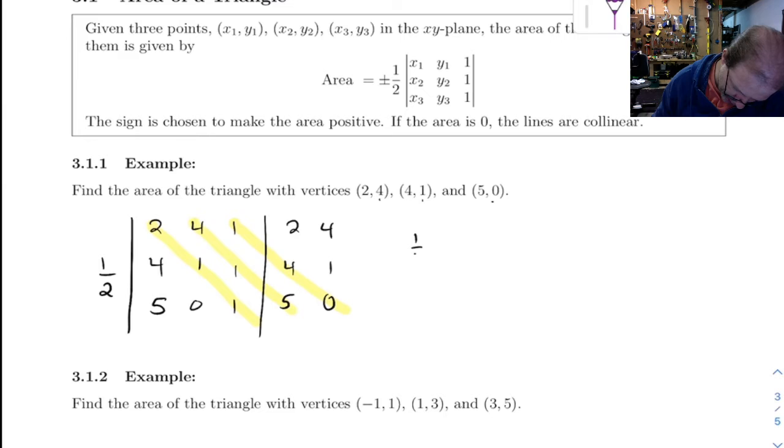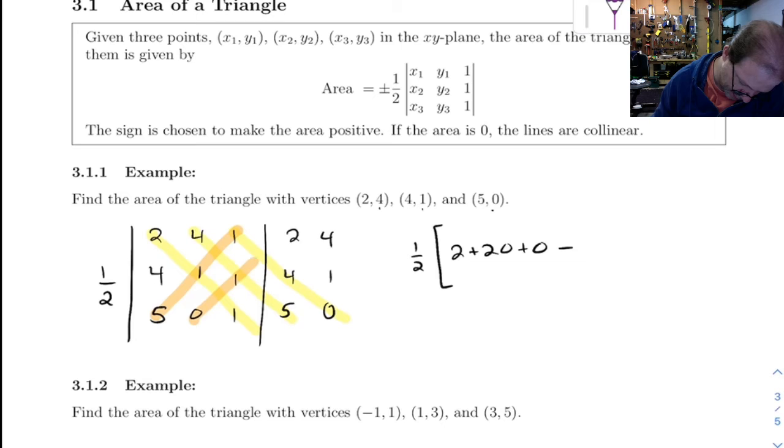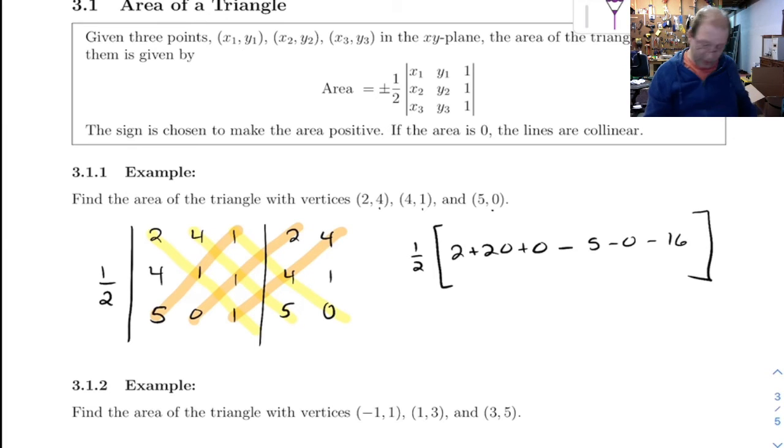So this gives me one half times, that's going to be 2 plus 20 plus 0, then minus 5, 0, 16. Well, let's see, what is that? 20 minus 16 is 4, minus 5 is negative 1, plus 2 is positive 1, so it's a half times 1. So this thing has an area of one half.